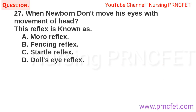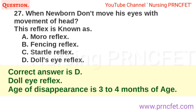Question 27: When a newborn doesn't move his eyes with movement of the head, this reflex is known as: A. Miral reflex. B. Fencing reflex. C. Startle reflex. D. Doll's eye reflex. Correct answer is D. Doll's eye reflex. Age of disappearance is 3-4 months of age.